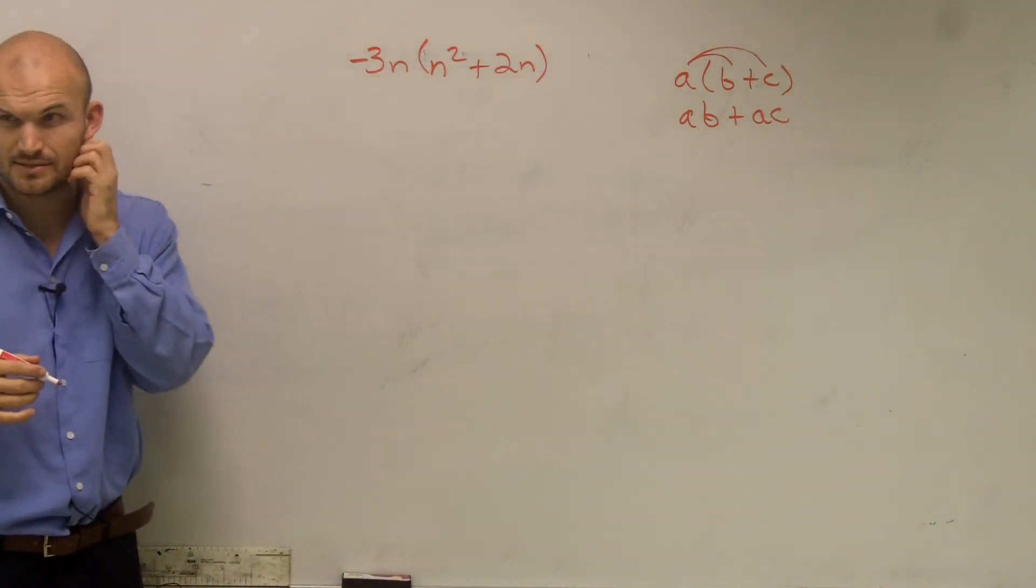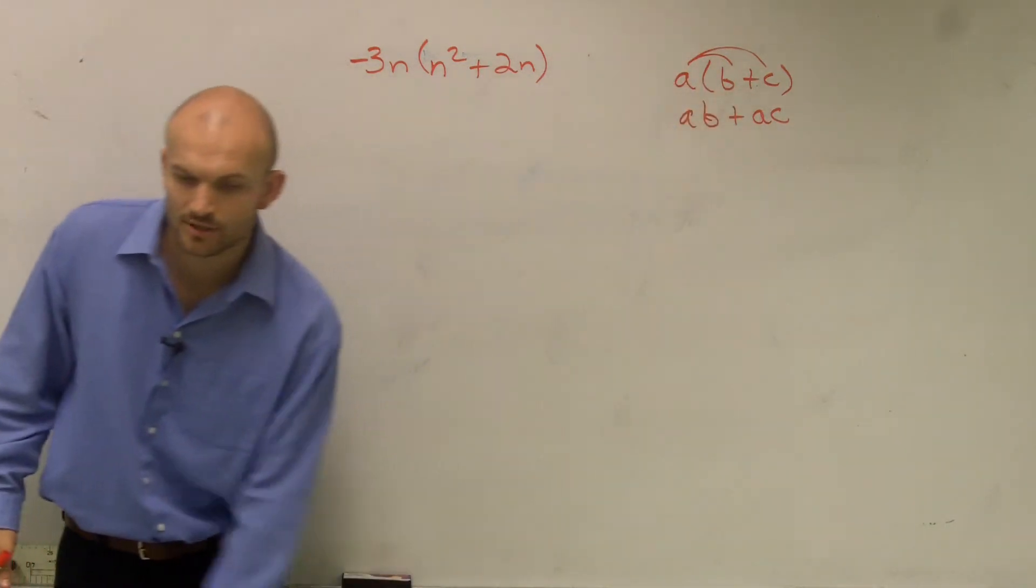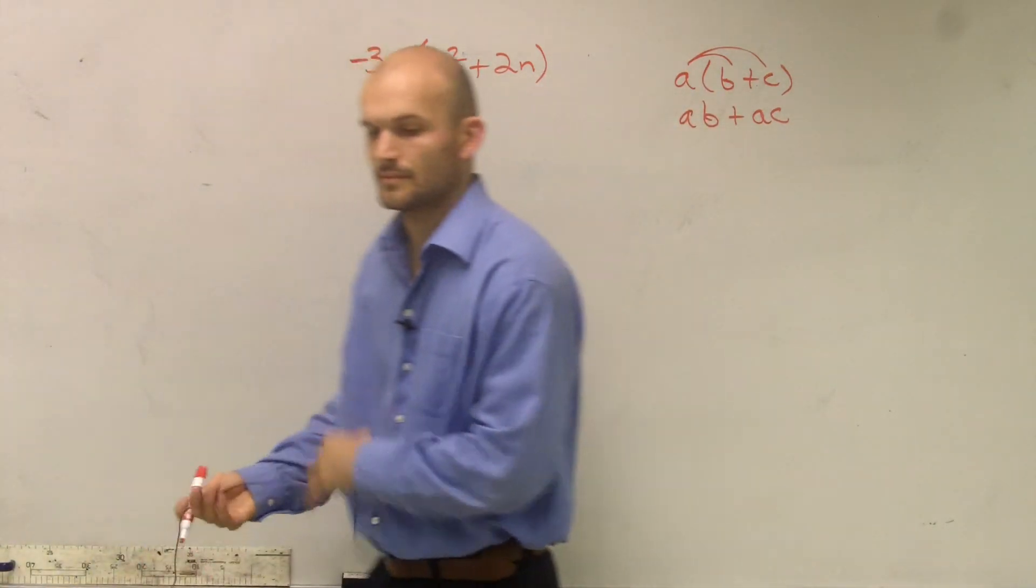So this is going to equal ab plus ac. Does that make sense? Whenever you have a number outside your parentheses, that number, you need to multiply that times every term inside of the parentheses.